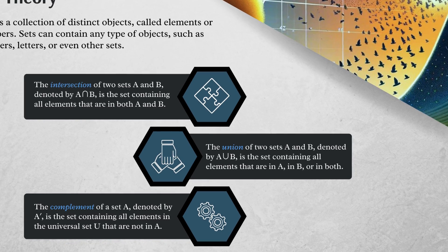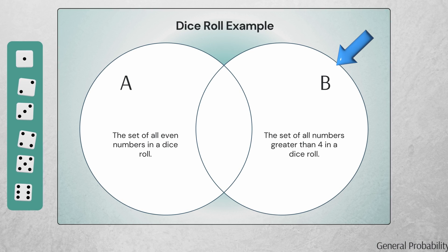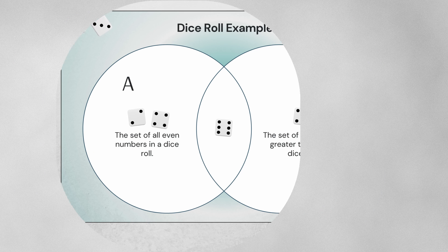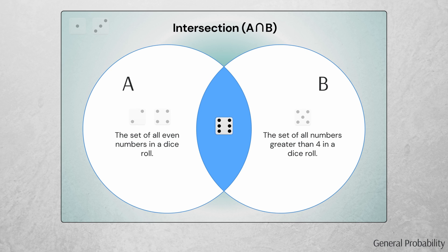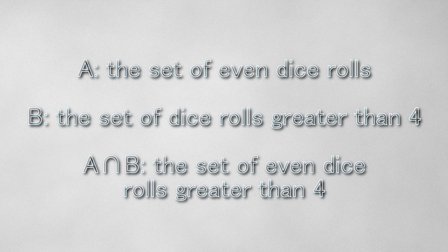To demonstrate this, we can visualize events using a Venn diagram. Going back to the second example with a fair six-sided dice roll, we now introduce an event B that is the set of all numbers greater than 4. Event A contains the elements 2, 4, and 6; event B contains 5 and 6; the overlapping element is 6, so we put that in the middle section. This middle sliver is known as A intersection B. The intersection of A and B represents the set containing all elements that are in both A and B — in this case, the set of all dice rolls that are even and greater than 4, which is simply the dice roll 6. Because there is only one element in A intersection B, the cardinality of A intersection B is 1, and the probability of A intersection B is 1 over 6.